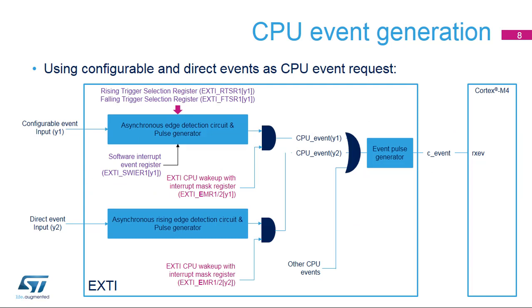This figure explains the various stages enabling the conversion of a configurable event active edge into a processor event. Both configurable and direct events can be configured to issue events to the CPU, steered to its RxEV input. Unlike interrupt requests, the CPU has a unique event input, so all event requests are OR'd together before entering the event pulse generator. The registers used to mask event generation are different from those used to mask interrupt generation: EXTI-EMR instead of EXTI-IMR.